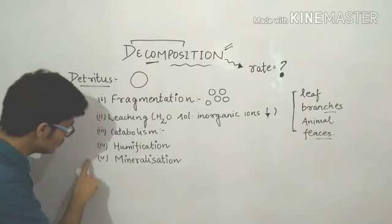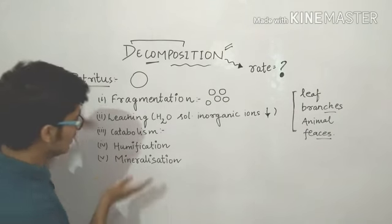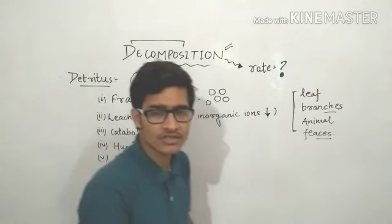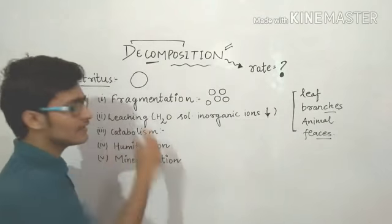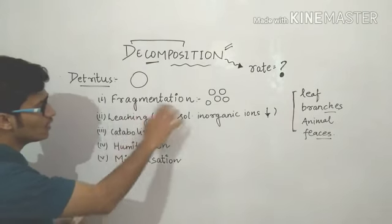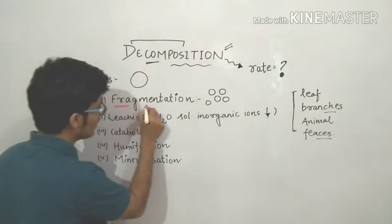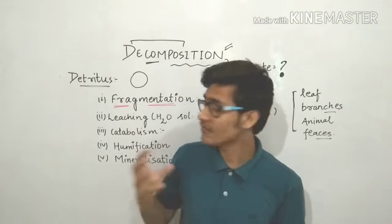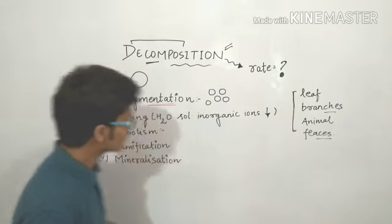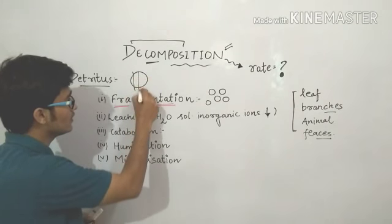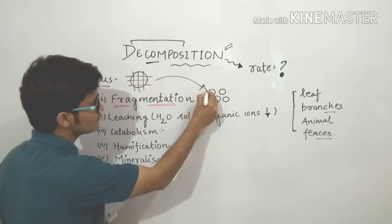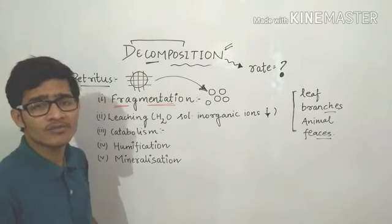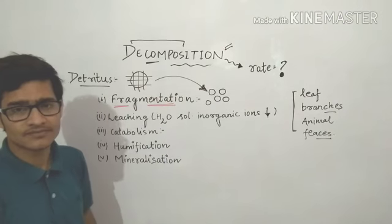We have to go through the five major phases which contribute to decomposition. When all these processes are complete, we say that the detritus is fully decomposed. The very first process is fragmentation. As the name indicates, fragmentation simply means that we are going to break the detritus into fragments. We take a large piece of detritus and break it into smaller pieces — that is fragmentation.